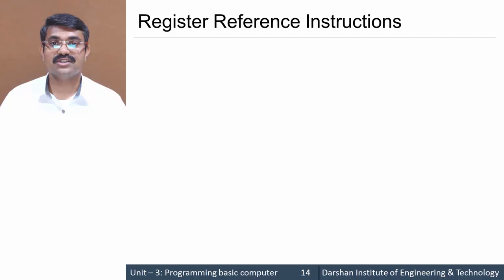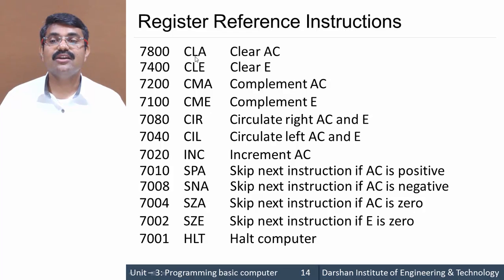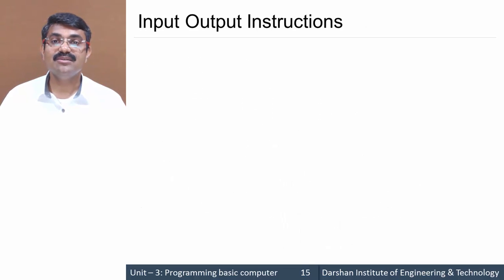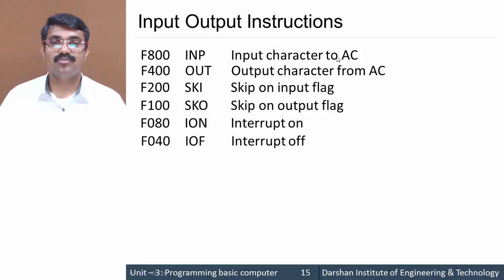Similarly, we have register reference instructions such as CLA, CLE, CMA, CME, etc., along with their hex codes and what each instruction performs. You need to remember all these instructions. The last category is input-output machine instructions: INP, OUT, SKI, SKO, ION, IOF — with their corresponding hex codes and functions.